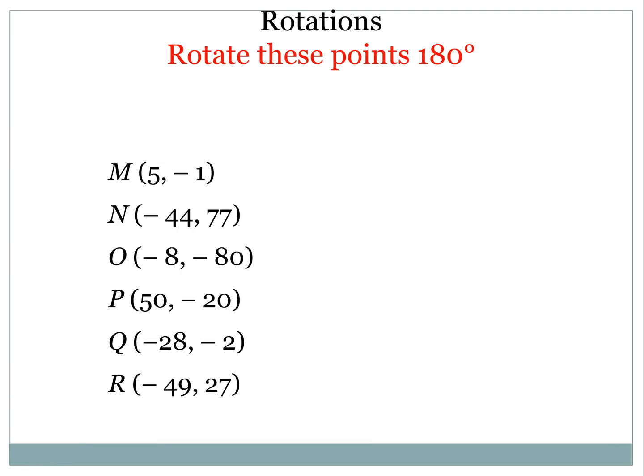So if all we're doing is changing the sign of x and y, I'll do m with you guys, and then go ahead and pause the video, and try n through r on your own. So again, all I have to do is change the signs of x and y, so 5 would become negative, and 1 would become positive. And that's m prime.